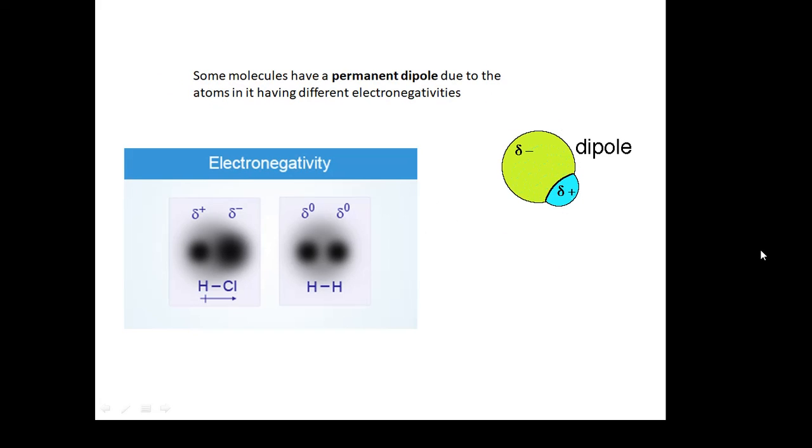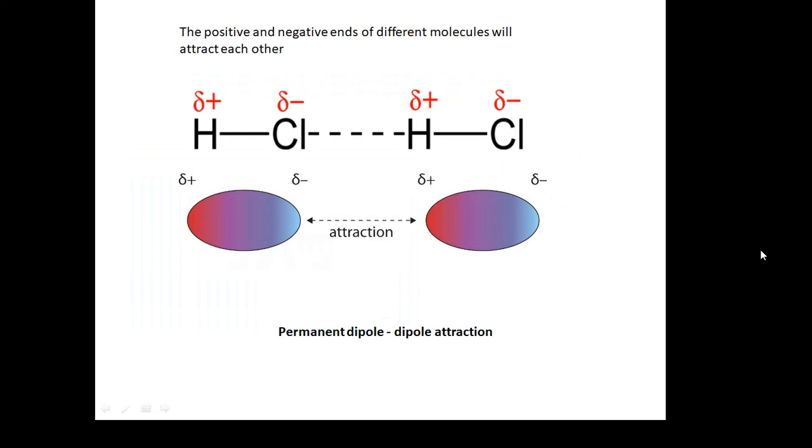Now, some molecules have a permanent dipole. And we talked about electronegativities in another video. And so, some molecules have a negative end and a positive end all of the time. They have a permanent dipole.